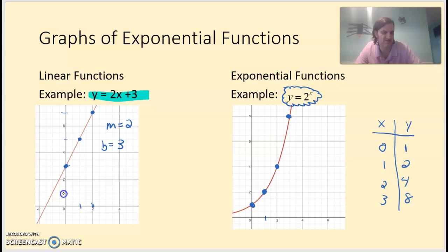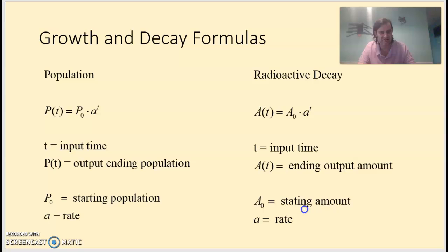But the idea here is that the linear functions grow at the same rate the whole time. This one here was going up 2 over 1 every step. Where this one here, the first time it went up 1 over 1, the next time it went up 2 over 1, the next time it went up 4 over 1. So it has a ratio, not a consistent growth.